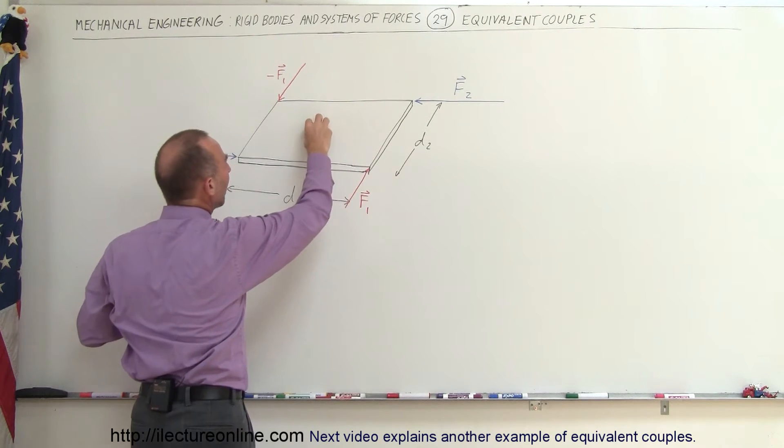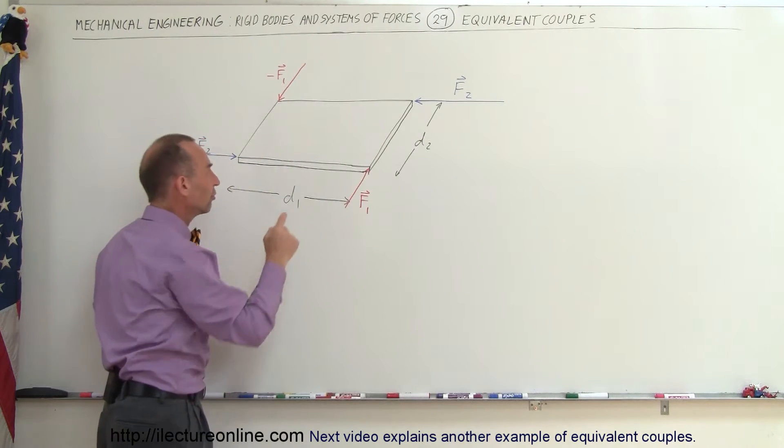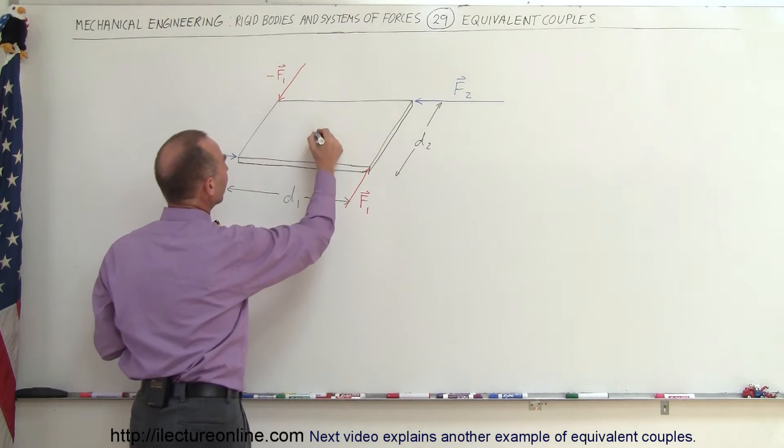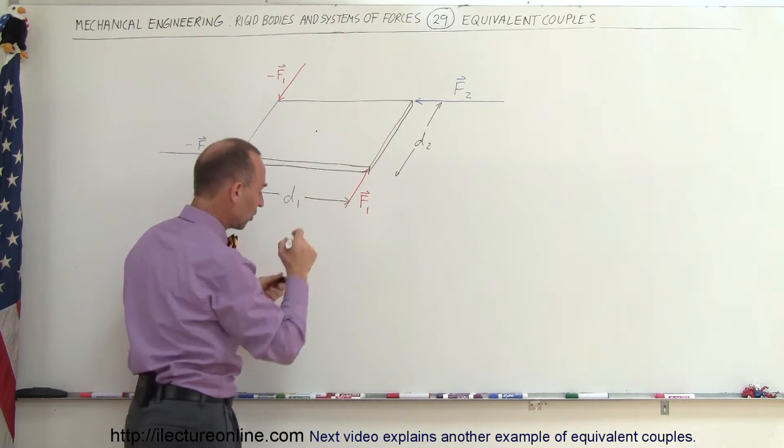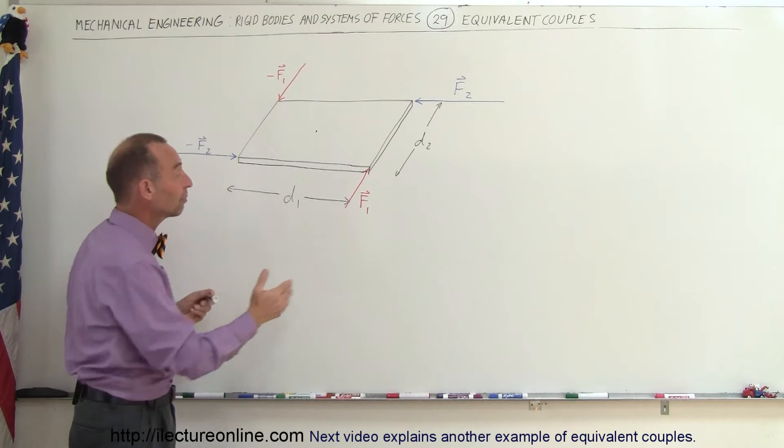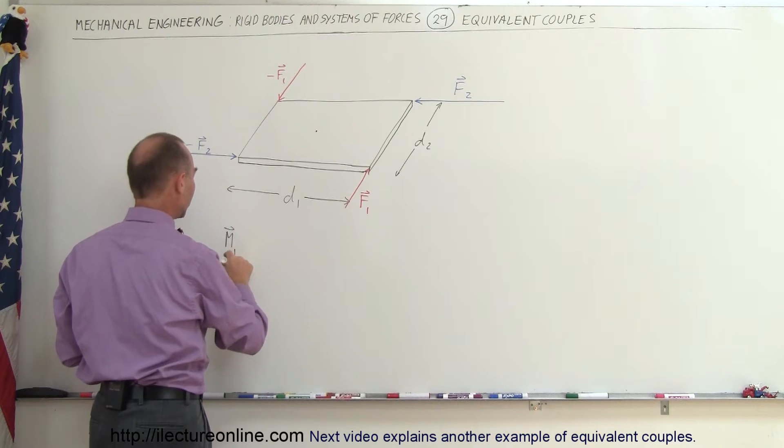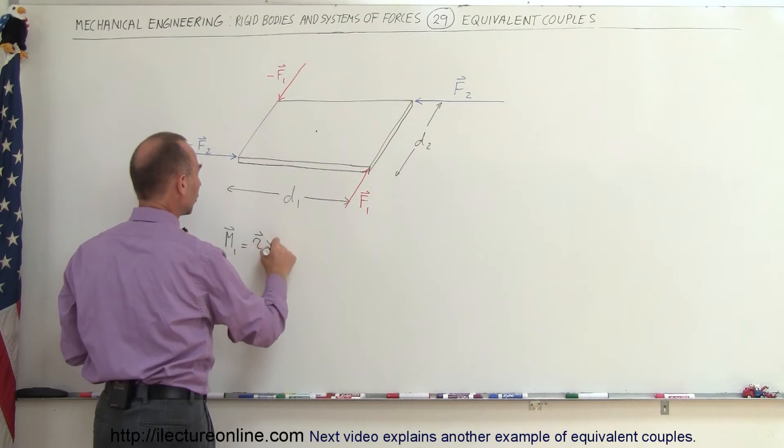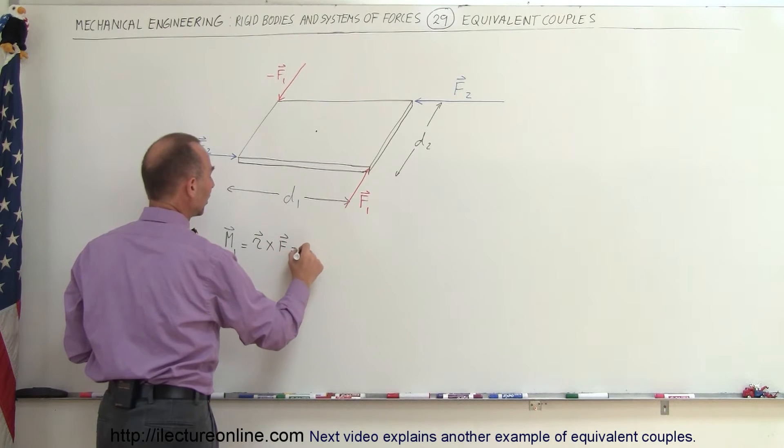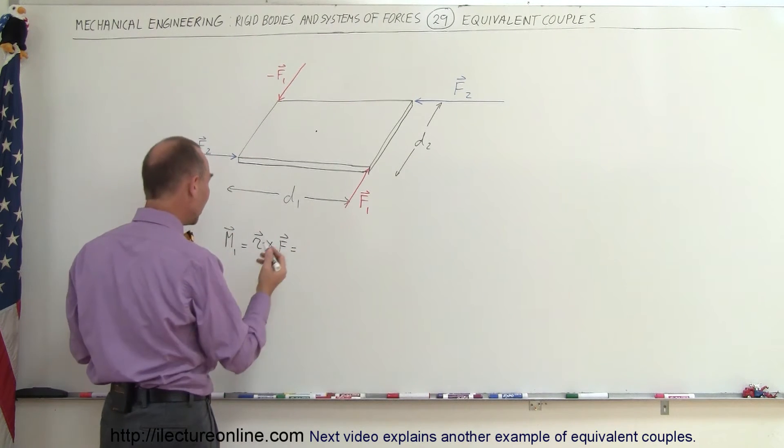If we draw the point in the very middle, right there, and we want to try to calculate the moment caused by that first couple, we can say that the moment caused by that couple, moment sub 1, is equal to R cross F, which is equal to, well, if we want to find the magnitude of that, let's go ahead and try to find the magnitude of the moment.